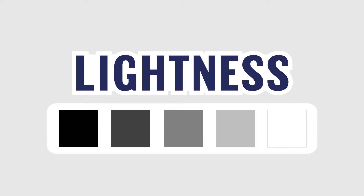The scale from white to black is called lightness. In printing, we use this scale to adjust how bright or dark a color is.